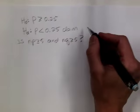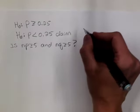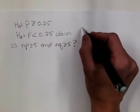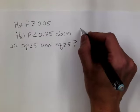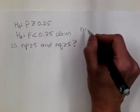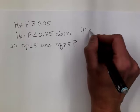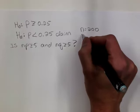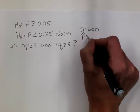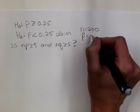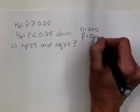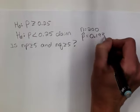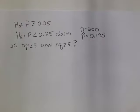In the problem, we're given that N is equal to 200 and P-hat, the sample proportion, was .193 — that is, 19.3%.